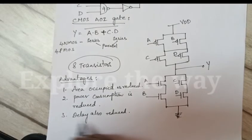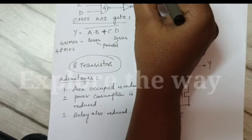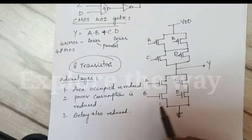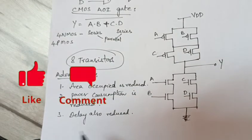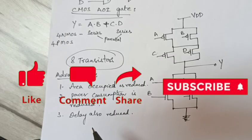Delay is reduced because two levels of logic are implemented by using only one level of transistors. These are the advantages with CMOS AOI gate.